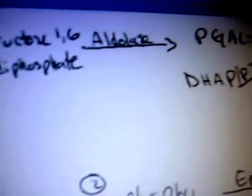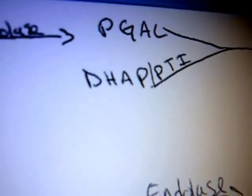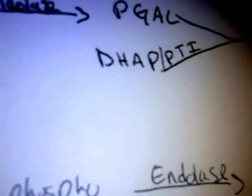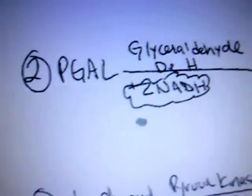What we're going to do with that is use aldolase to split it into two. We have a phosphoglyceraldehyde and a dihydroxyacetone phosphate. That dihydroxyacetone phosphate will be acted upon by phosphotriose isomerase, turning it into two PGALs, or phosphoglyceraldehydes.